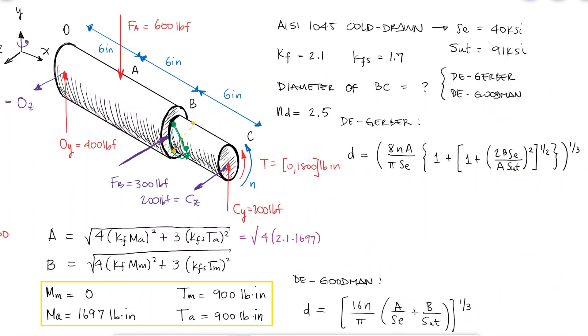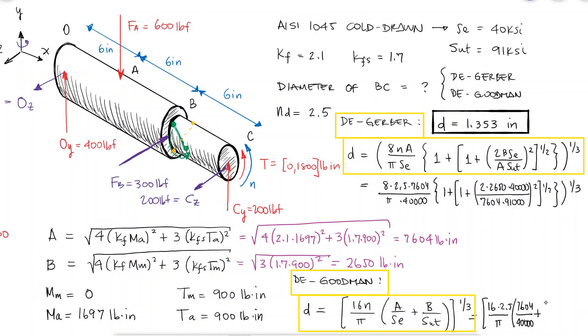Having the four values that we were missing, we can substitute them to calculate the diameter following the two fatigue failure criteria.